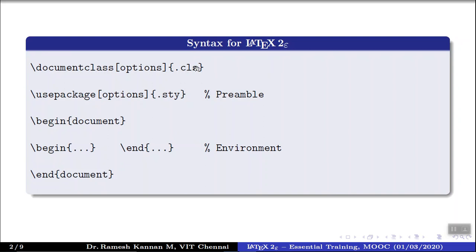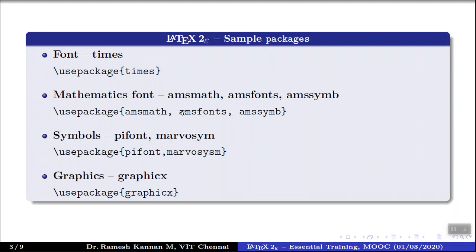We will discuss some default packages and their associated options. A package can be modified based on the arguments or options provided. For example, the hyperref package has a default behavior where the URL is printed in a box or frame, which can be removed by providing the option called hidelinks. Note that options are not mandatory for all packages.